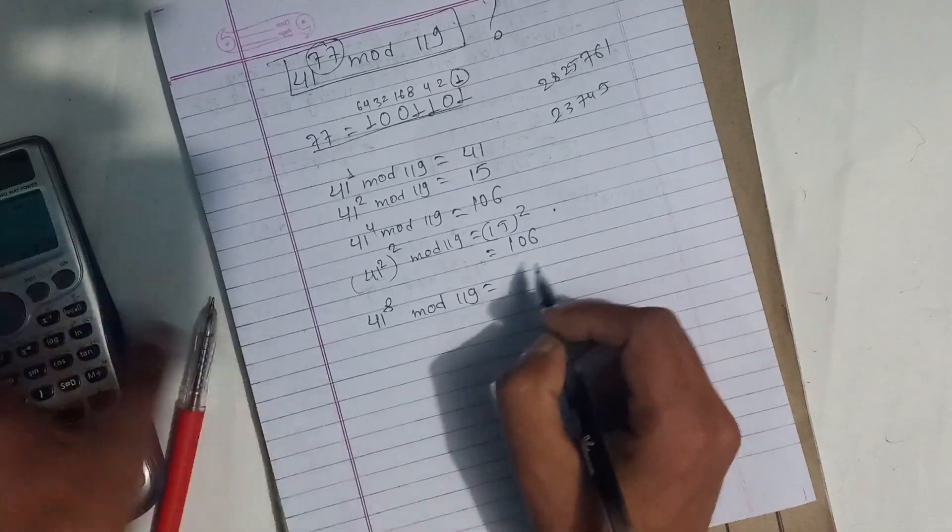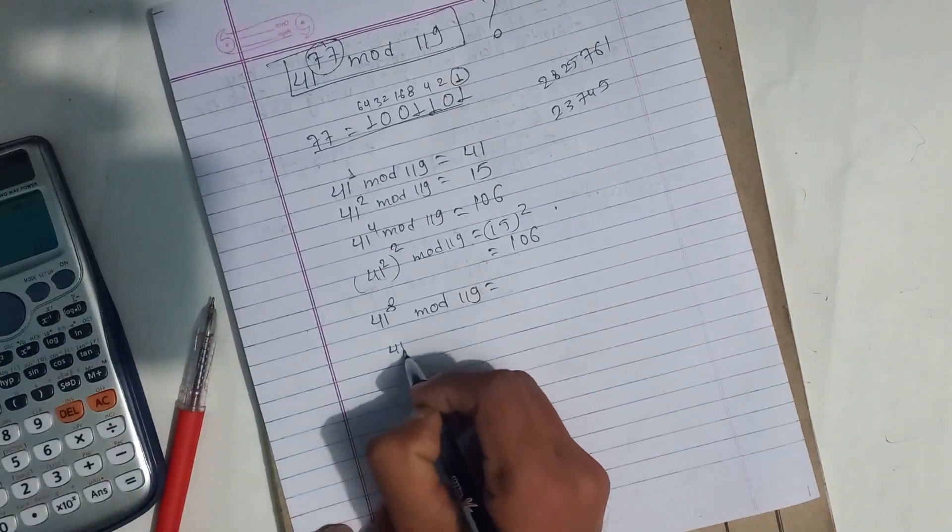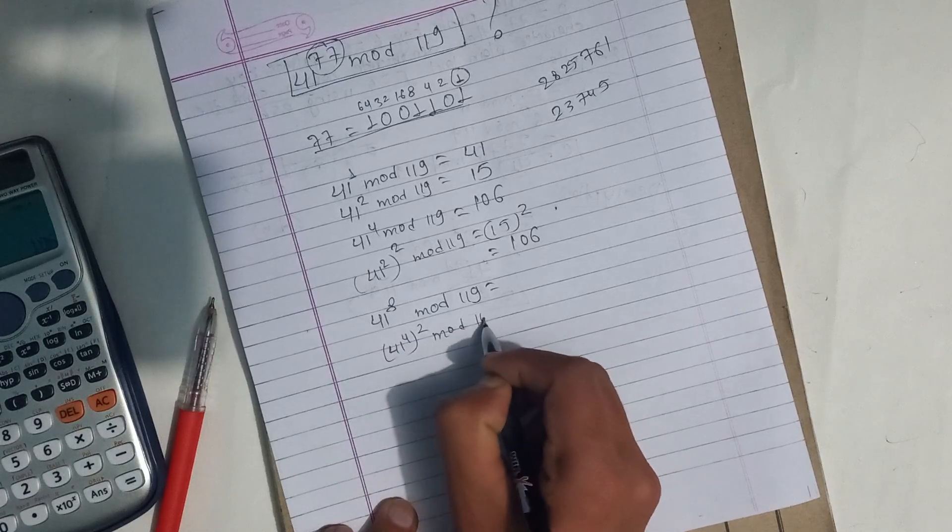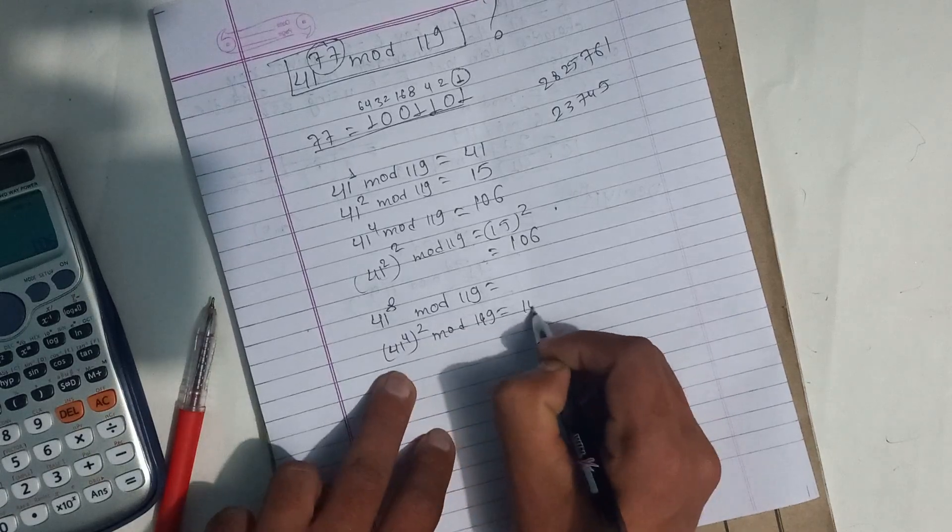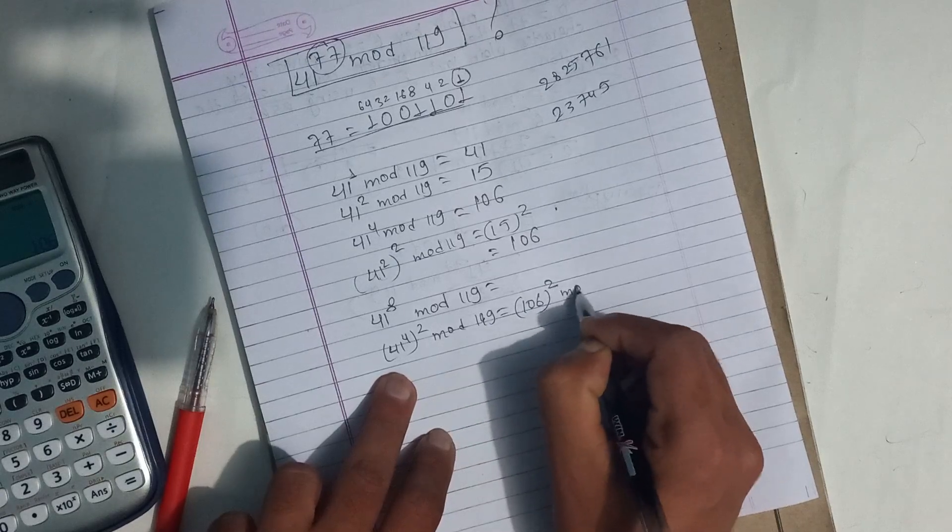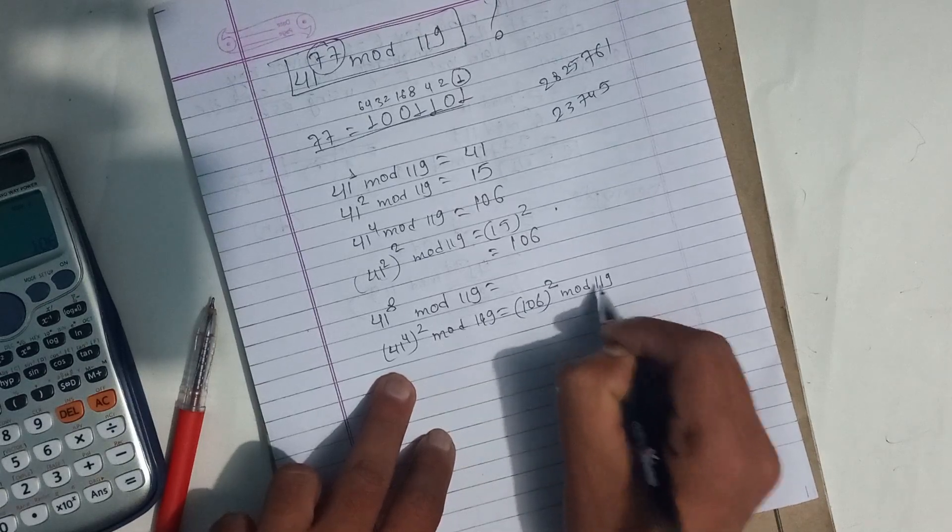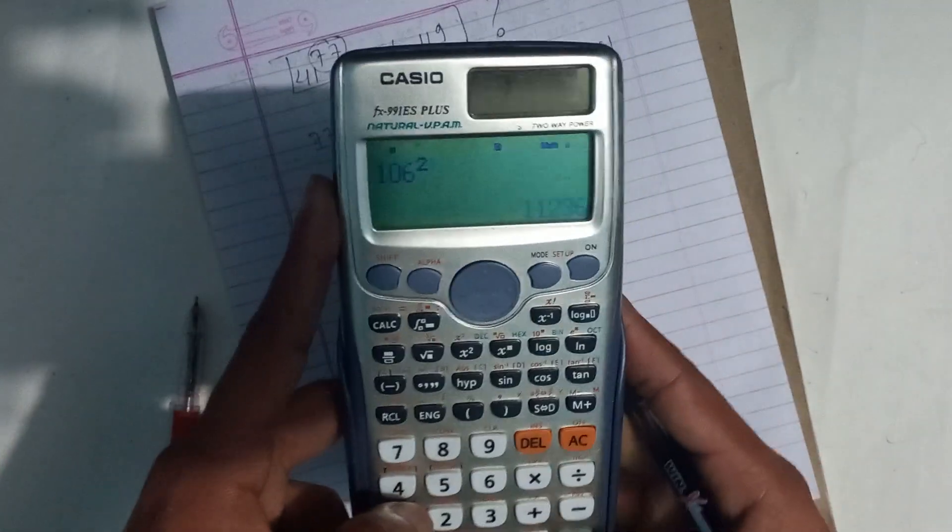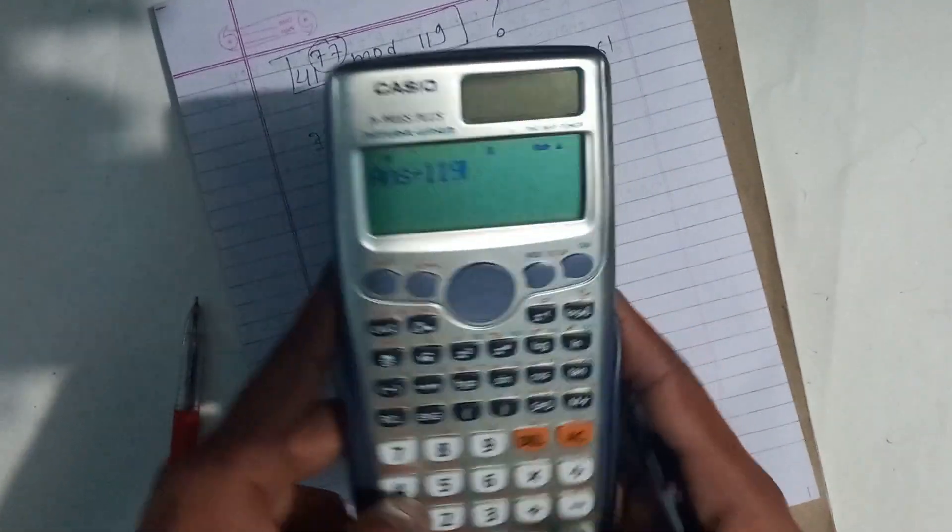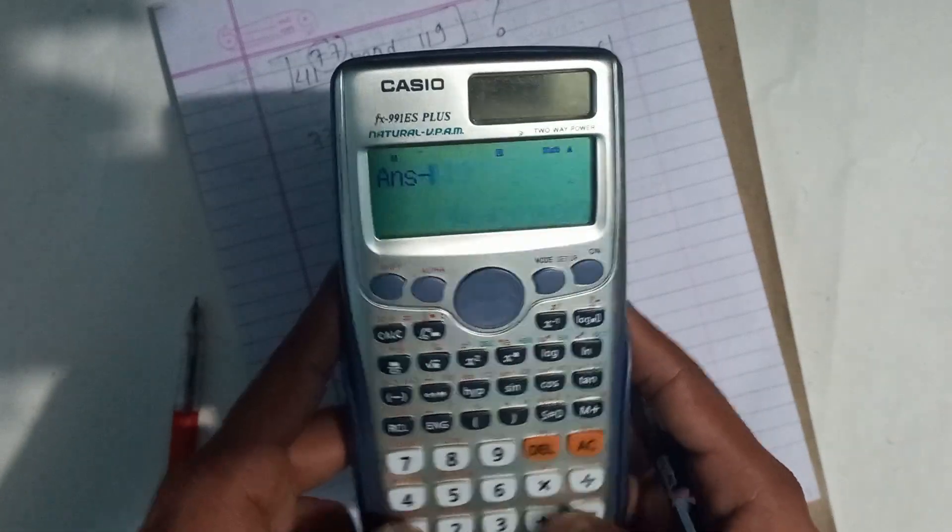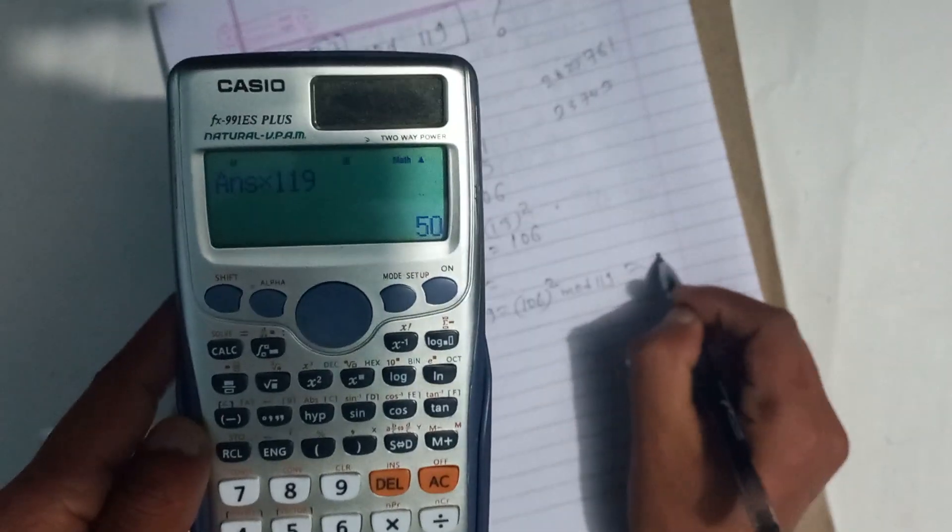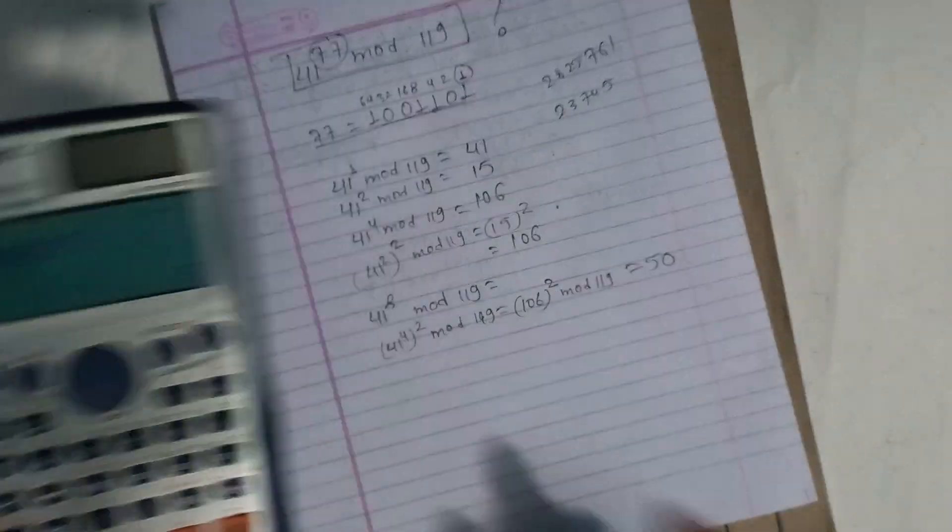This is how I'm going to do this. Here I'm going to compute 41 to power 16 mod 119. So 106 squared, I'm going to use 106 times minus 19. This gives us a value of 50.